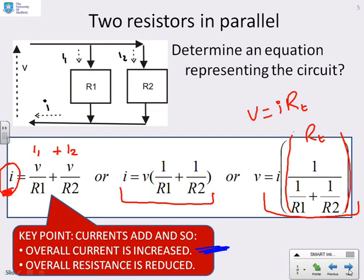What does this mean? If the current has increased, then that means that RT must be less than R1, and RT must be also less than R2. So the overall resistance of the circuit is less than if I had just R1 or R2 on their own.